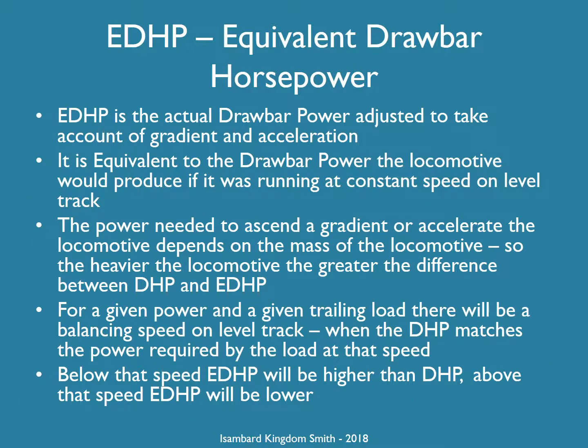A locomotive that is producing a particular indicated power at a particular speed will have a lower drawbar horsepower when it is accelerating or going up a gradient. Equivalent drawbar horsepower is the drawbar horsepower that the locomotive would produce at constant speed on level track. The heavier the locomotive, the greater the difference between drawbar power and equivalent drawbar power.